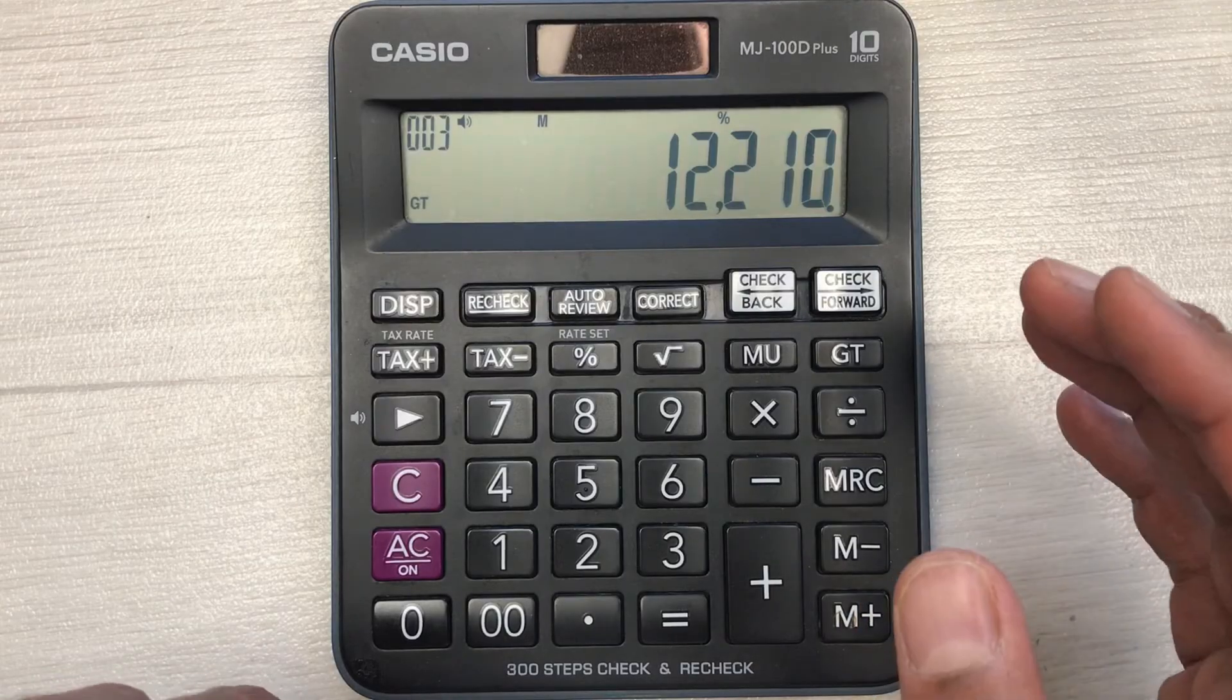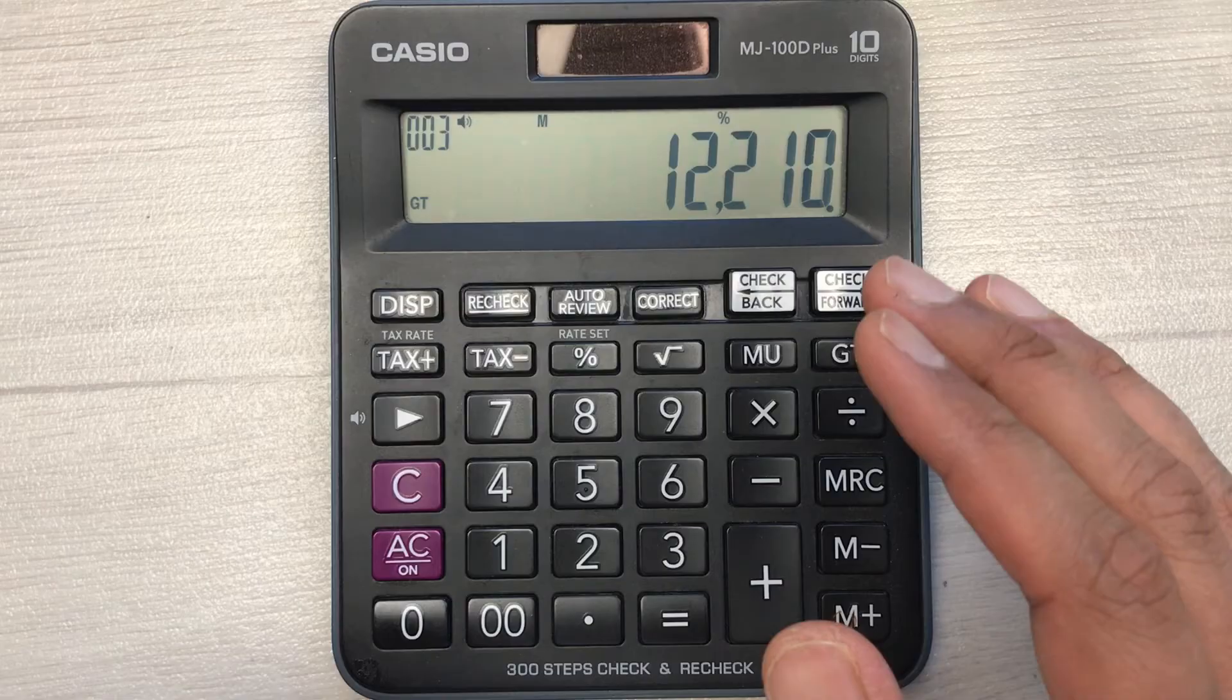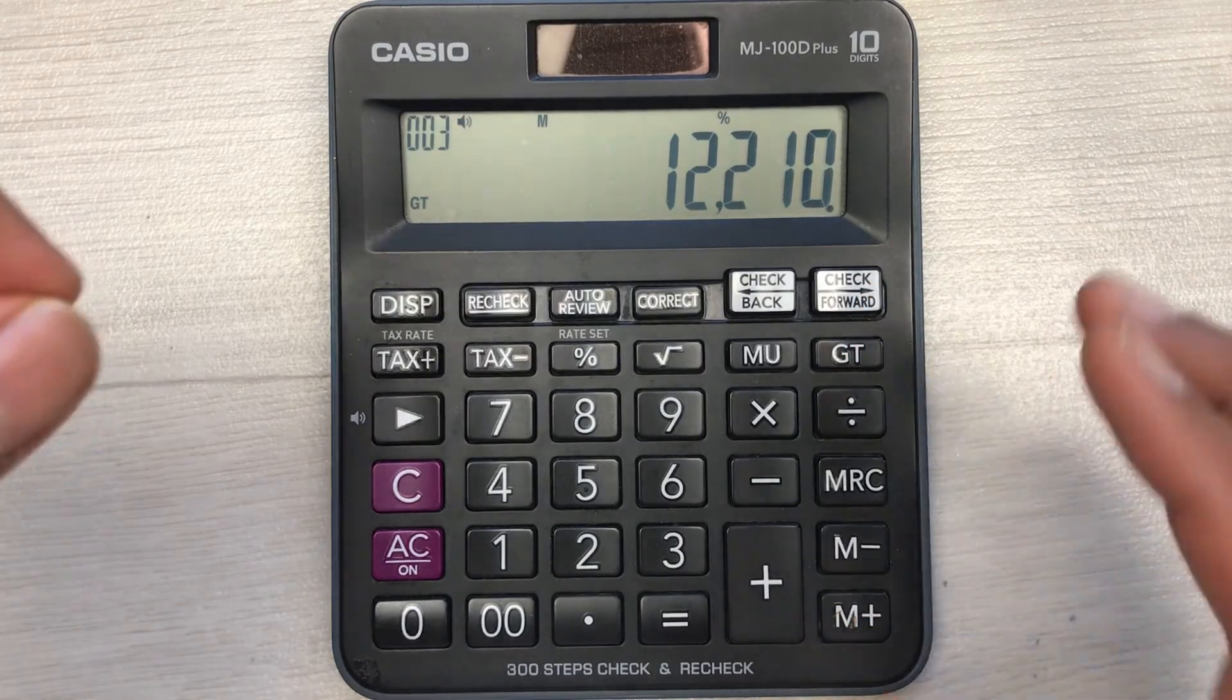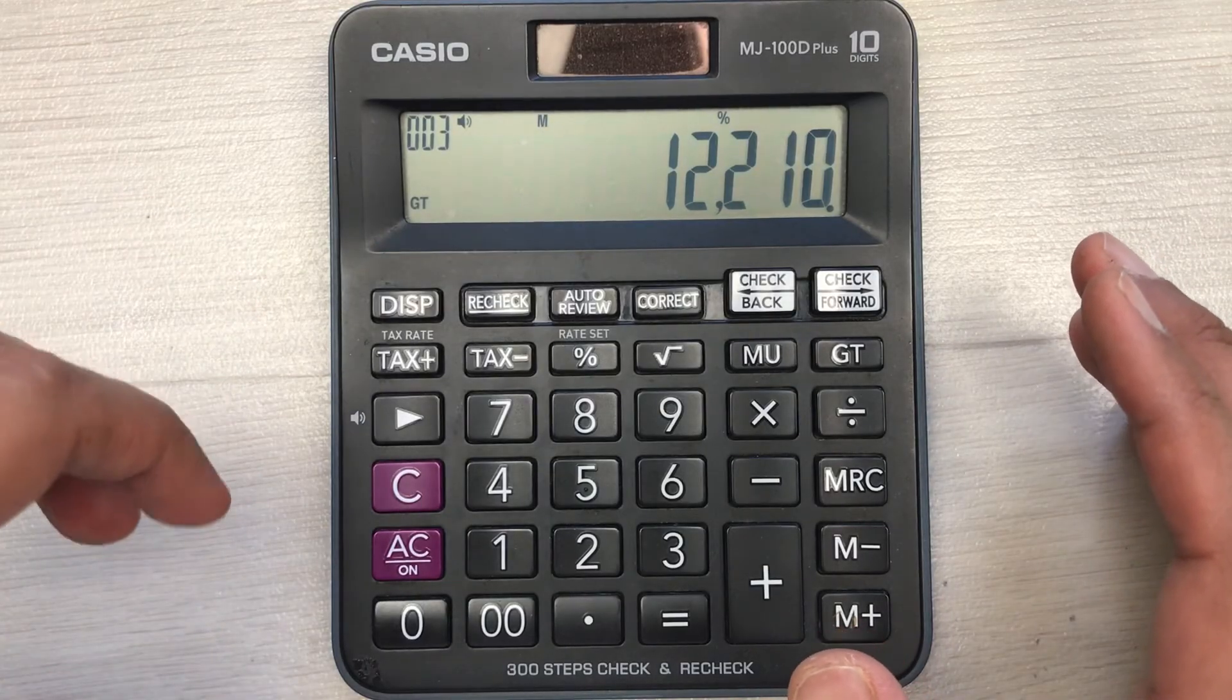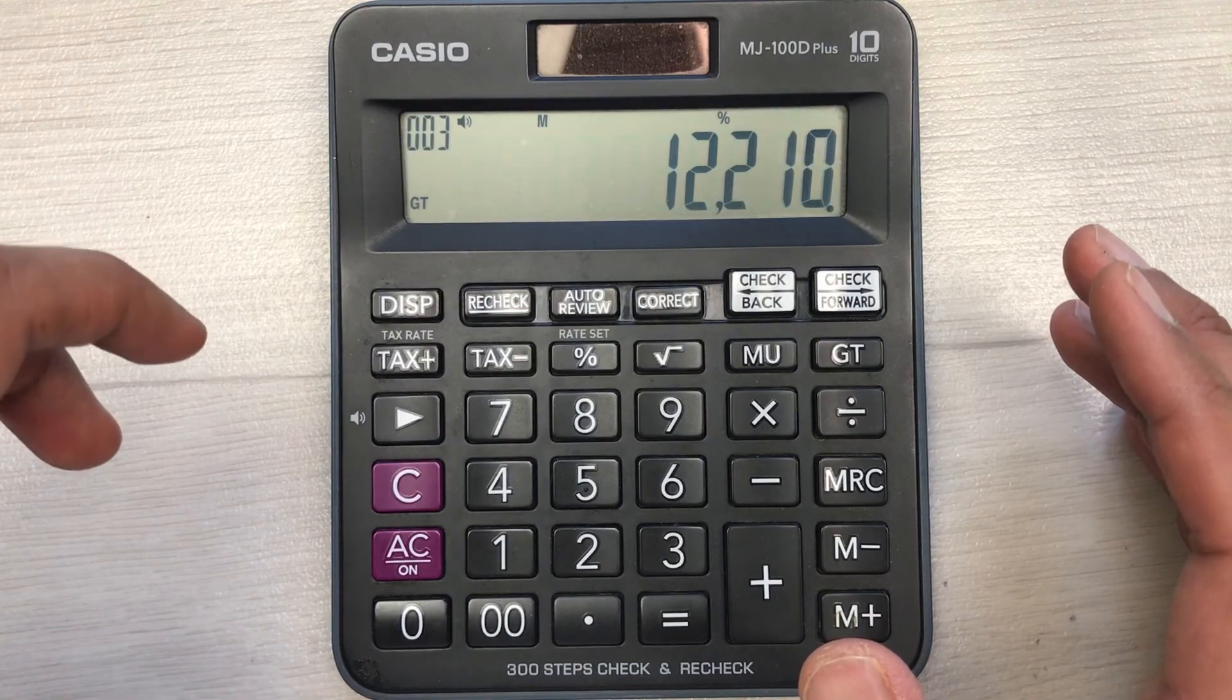So here is the final answer. After 25% discount you have to pay 12,210. So guys, this is how you can find out the 25% discount on your calculator. Please like this video and please subscribe to my channel. Thank you very much.